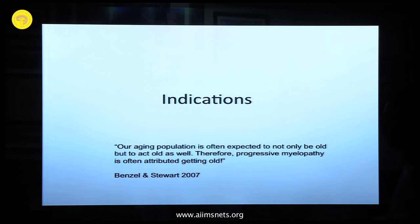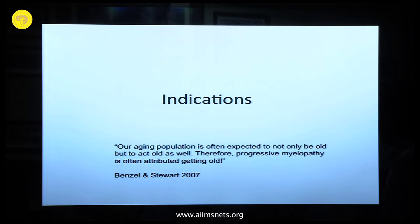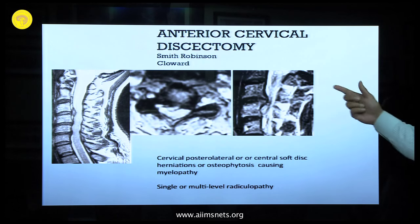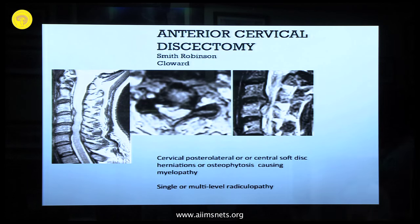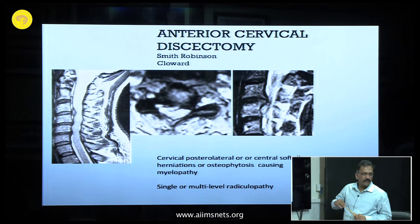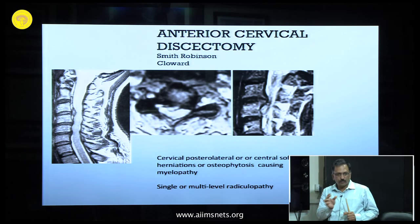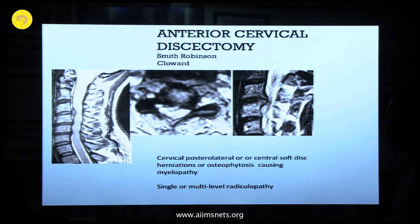Basically, everybody is getting old, but sometimes these patients have cervical myelopathy and we think they are just getting old. So we know what the indications for anterior cervical disease are. All of you know the difference between Smith-Robinson and Cloward's technique — they are just names of two scientists. Smith-Robinson is putting in a wedge graft, and Cloward was another famous neurosurgeon.